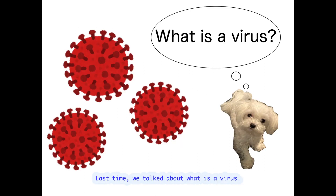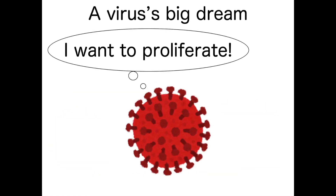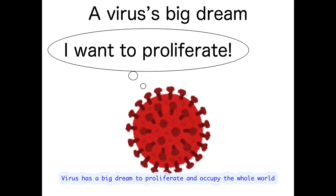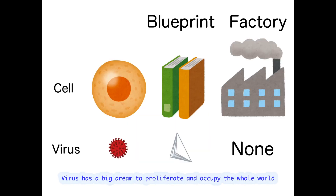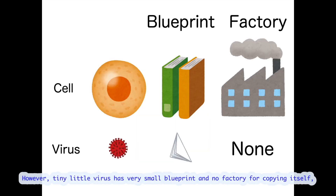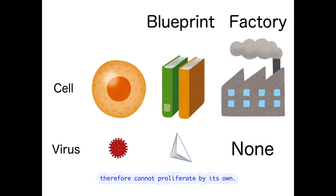Last time, we talked about what is a virus. Virus has a big dream to proliferate and occupy the whole world. However, tiny little virus has a very small blueprint and no factory for copying itself, therefore cannot proliferate by its own.